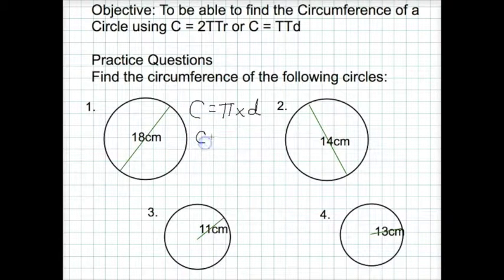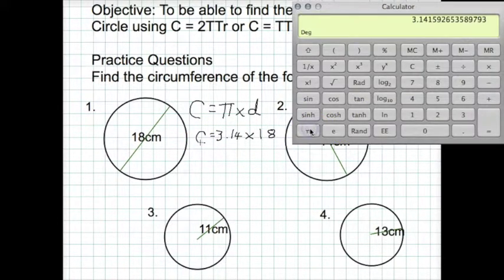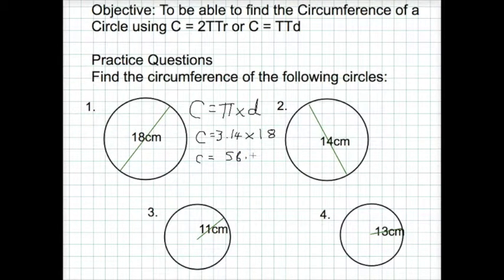It's a case of replacing our letters with the values we know. We press the π button on our calculator. π is 3.14, and we times this by our diameter, which is 18. If we type that into the calculator, π times 18 equals, we get the answer for the circumference as 56.54866.